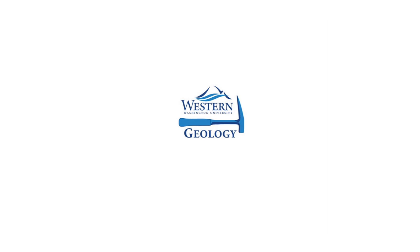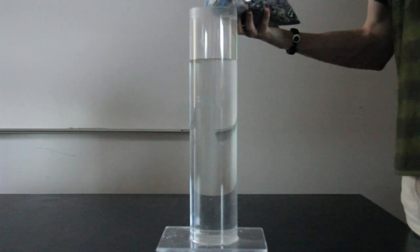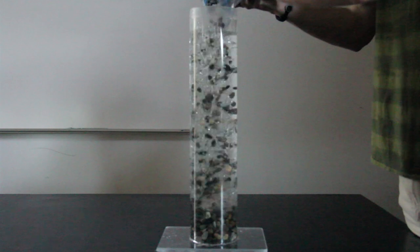The rate at which particles settle in a fluid is relative to their diameter. Here, we see a negative 3 phi settling in an acquiescent body of water.